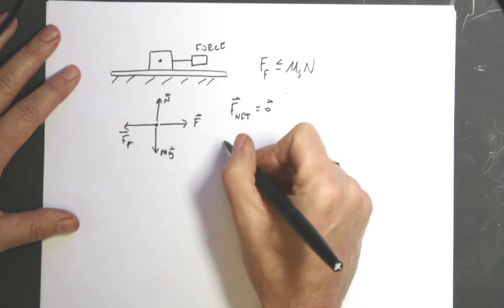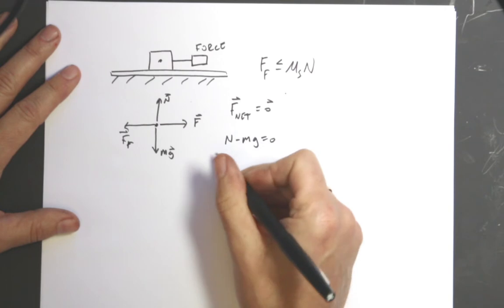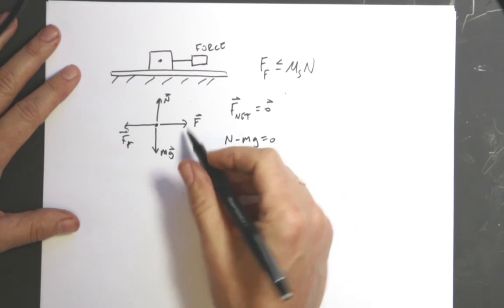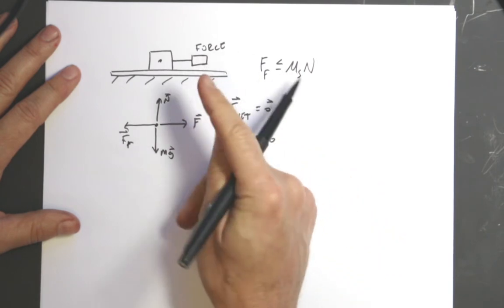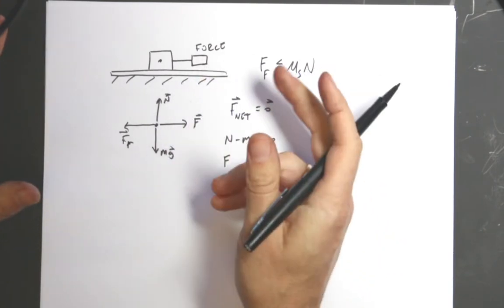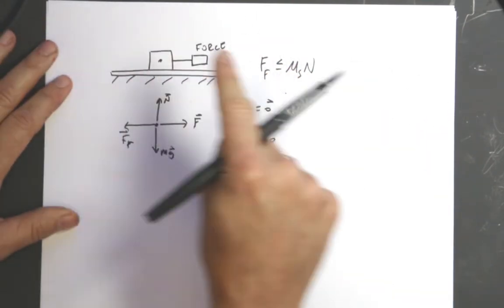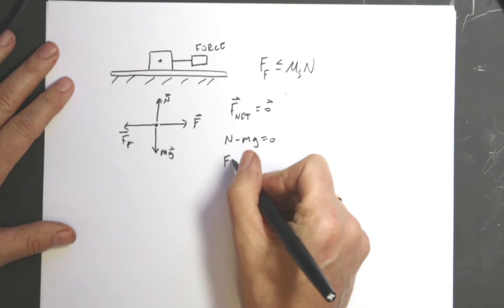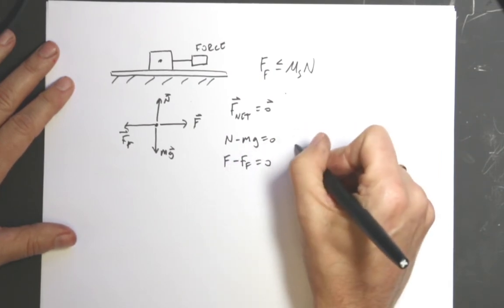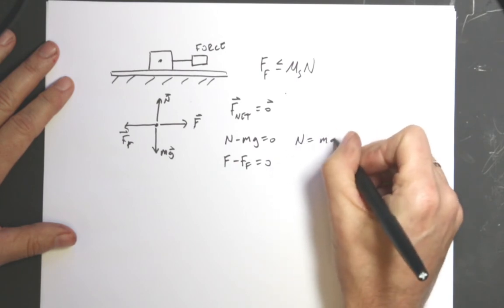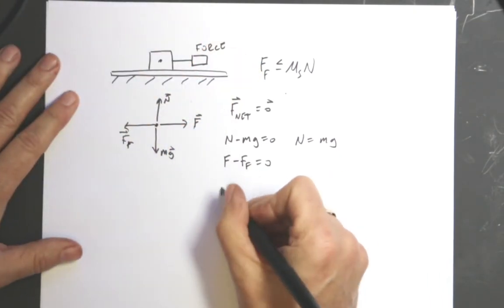In the y direction I have N minus mg equals zero, and in the x direction I have F, which is the amount that I get from the force scale. This could be a digital force scale or it could be like a spring scale where you pull it and it has little markings on it. So F minus the friction equals zero.